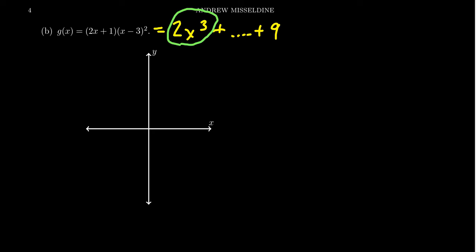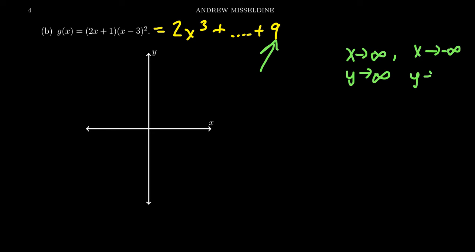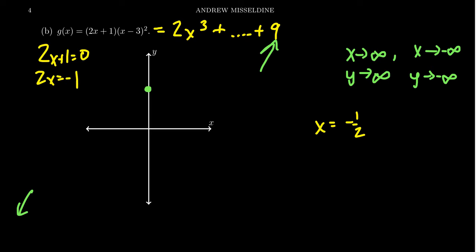The end behavior looks like an odd monomial function with a positive coefficient. So as x goes to infinity, y goes to infinity — pointing up on the top right. And as x goes to negative infinity, y goes to negative infinity — pointing down on the bottom left. The y-intercept is going to be positive 9, so again we get something above the x-axis. The first x-intercept comes from 2x + 1 = 0, giving x = −1/2.